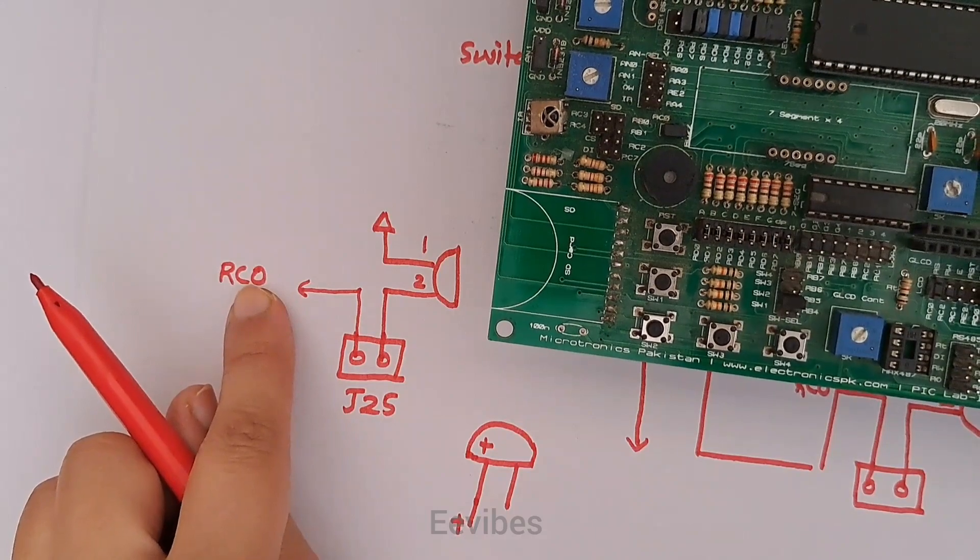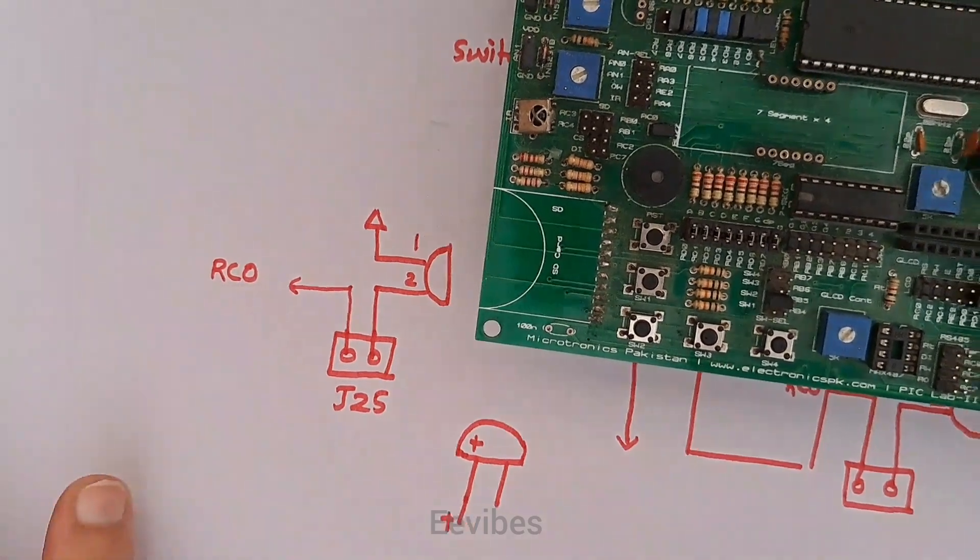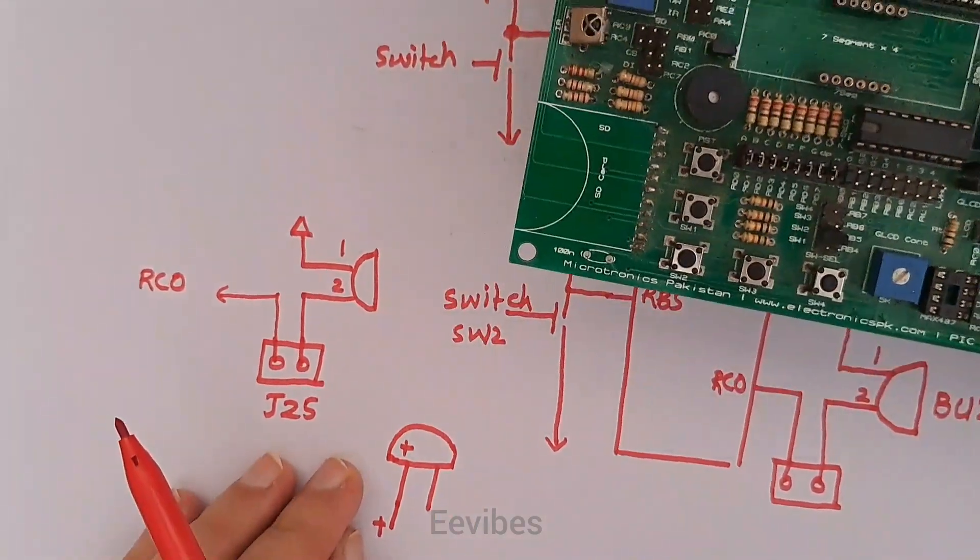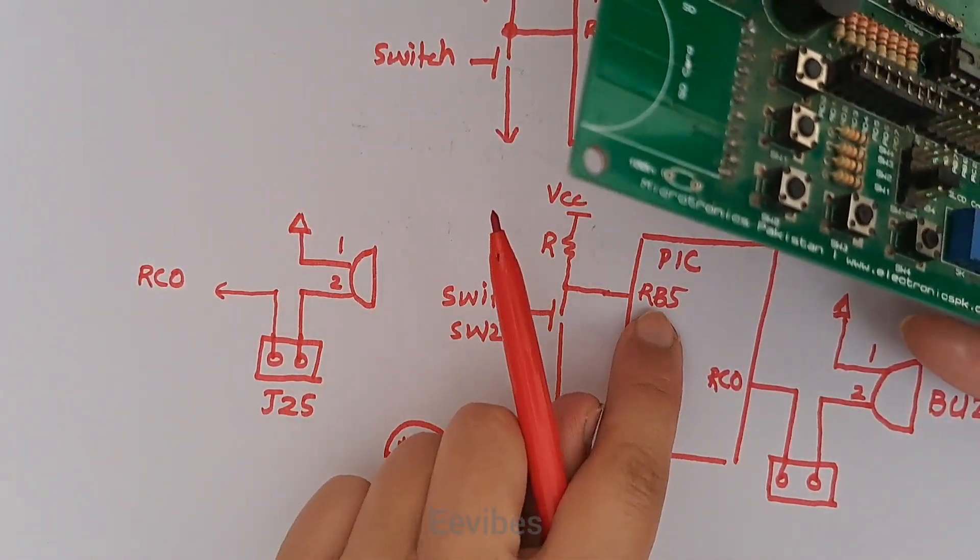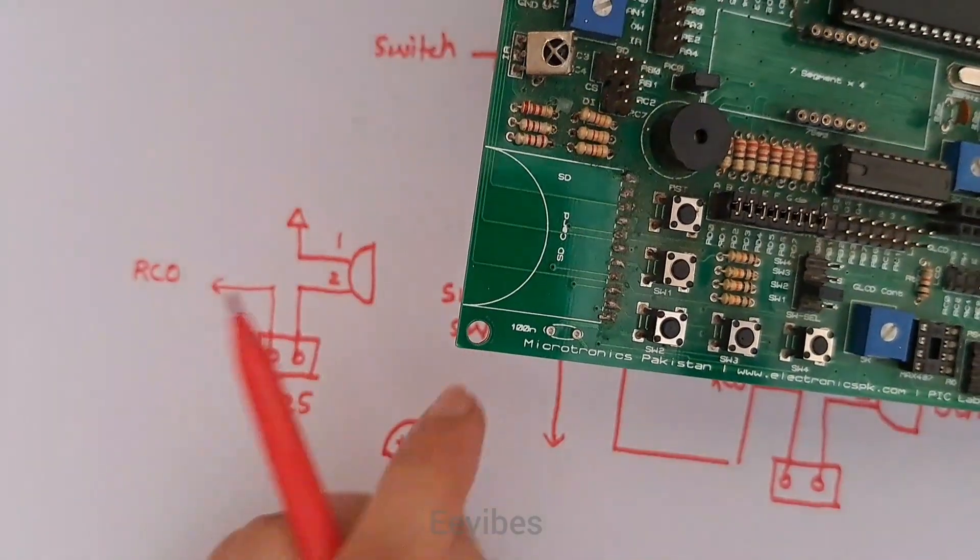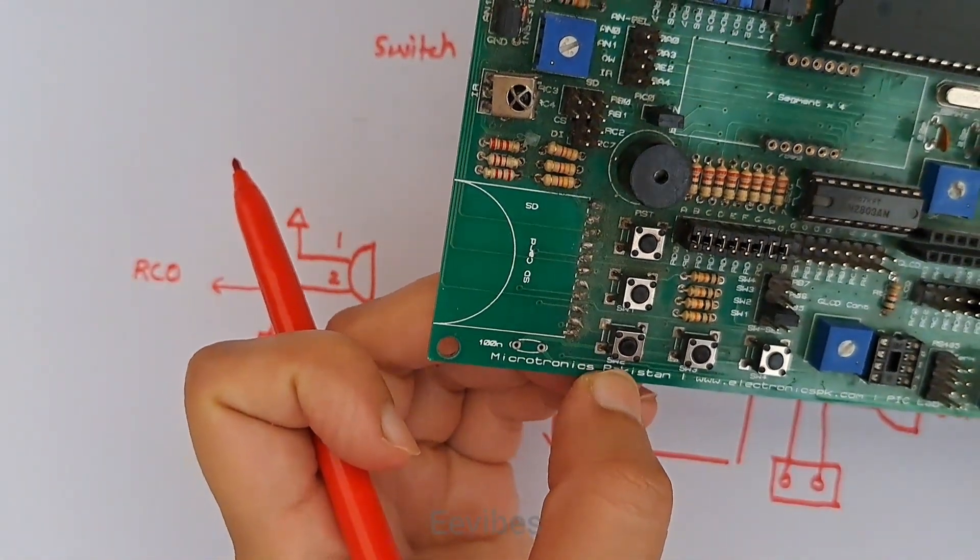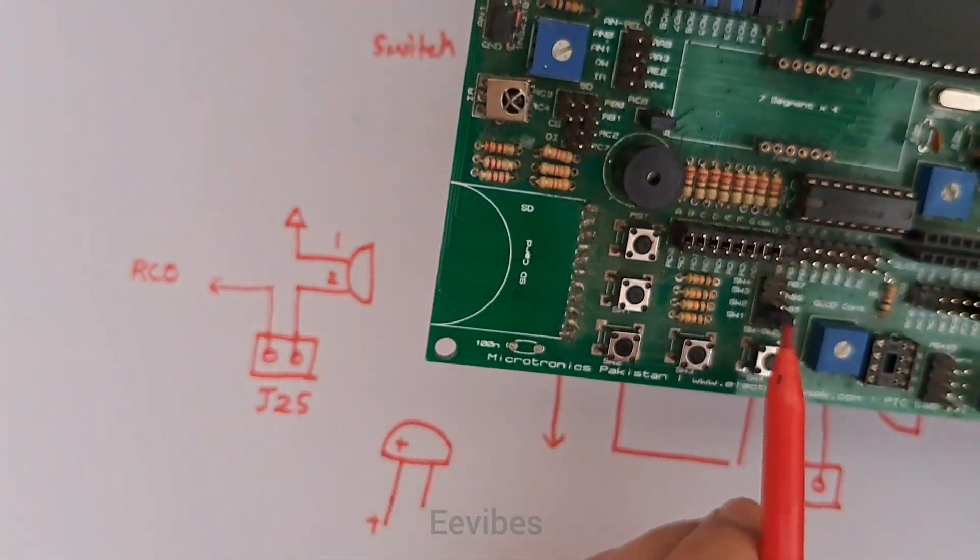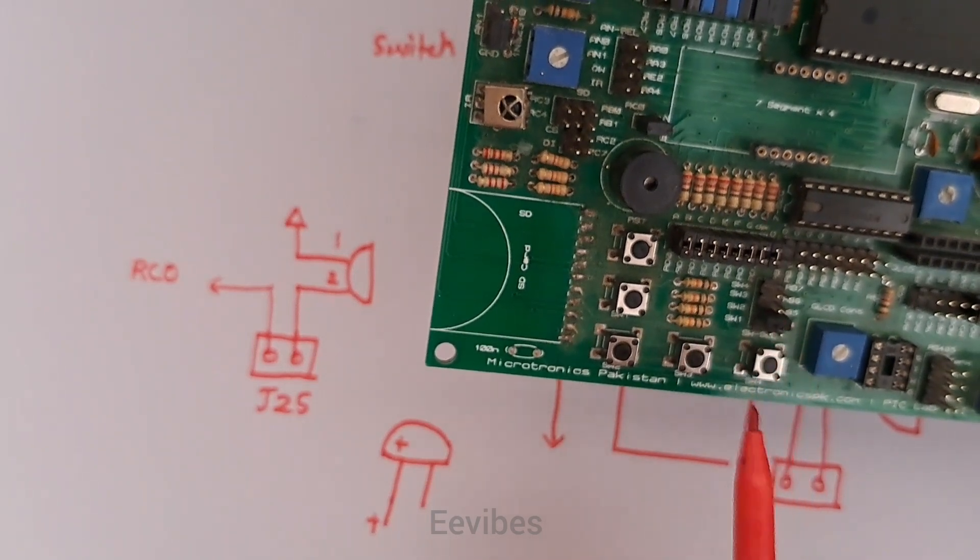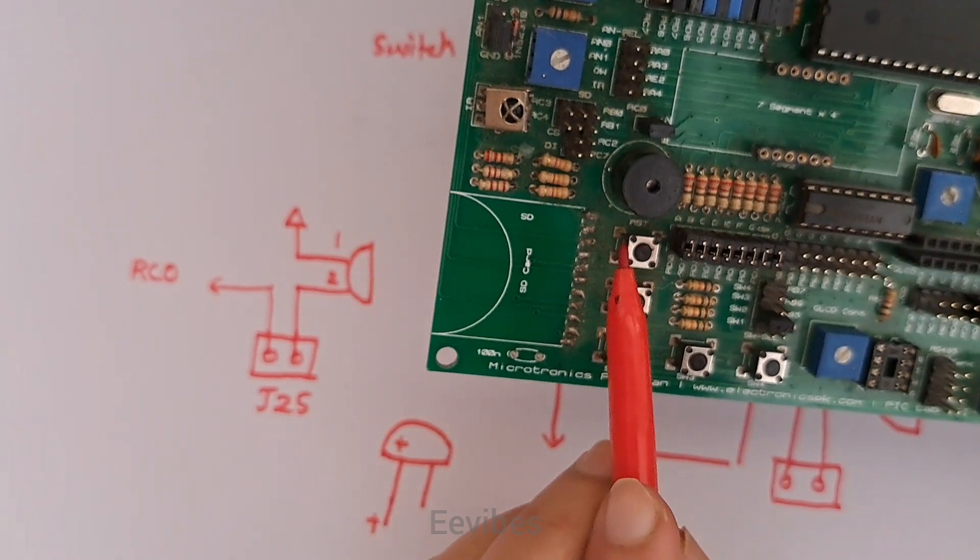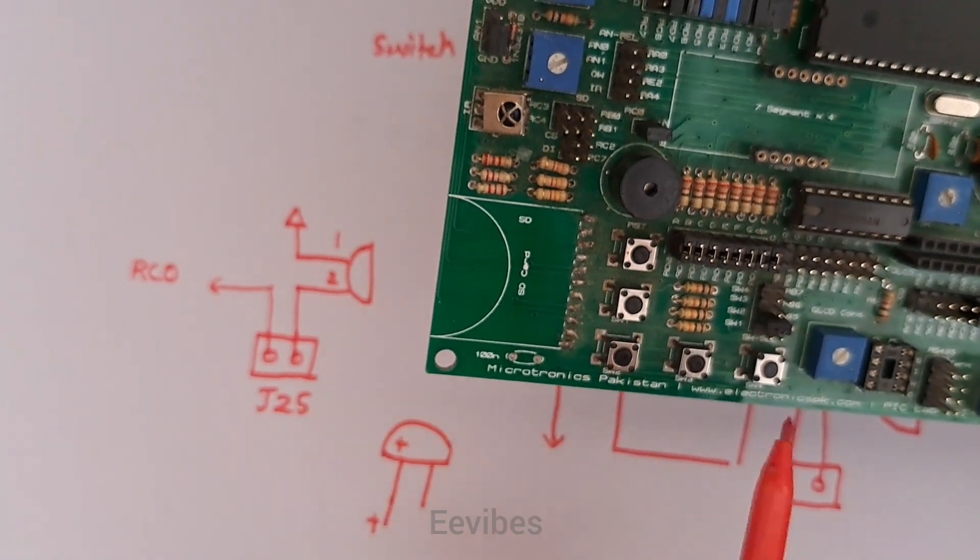And here RB5 is connected at switch 2, so this is my switch 2. In order to use switch 2, I need to connect this junction. Similarly you can see different switches or you can use any of these switches for providing the input.